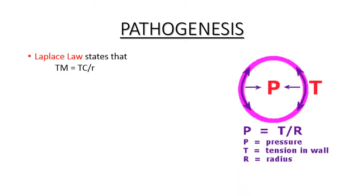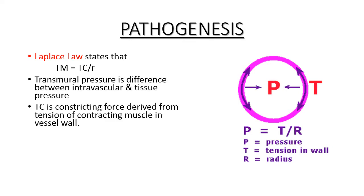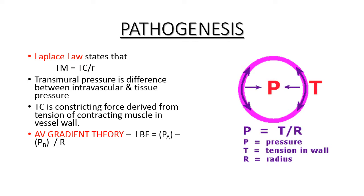The pathogenesis is explained by Laplace's law: transmural pressure equals the constricting force divided by the radius of the vessel. The constricting force is due to the tension of the vessel wall from smooth muscle, and when divided by the radius of the vessel, it gives the transmural pressure. There are also two other theories: the AV gradient theory and the microvascular occlusion theory.